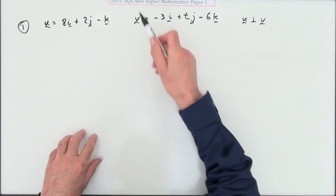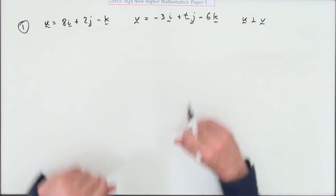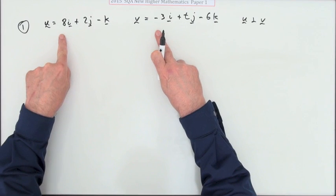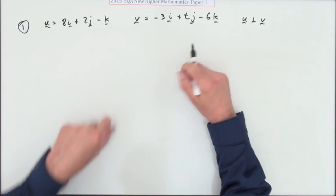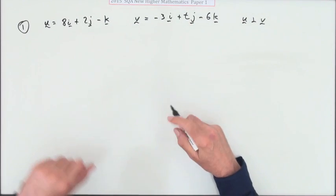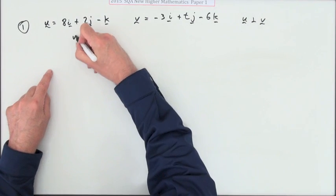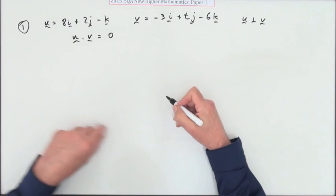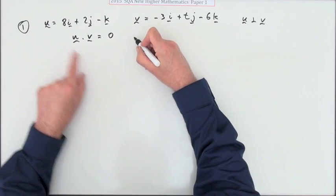Question one from Paper 1 of this New Higher, kicking off a little two-mark question. Here are two vectors expressed in terms of the unit base vectors and it says they're perpendicular. Here's an unknown component, find it. Well if they're perpendicular that means that u dot v must equal zero, the scalar product zero.